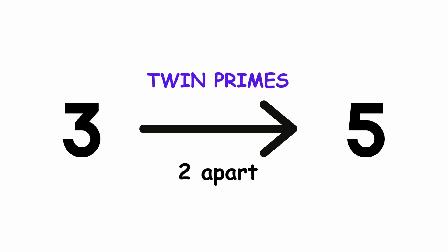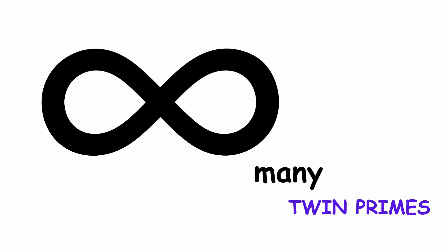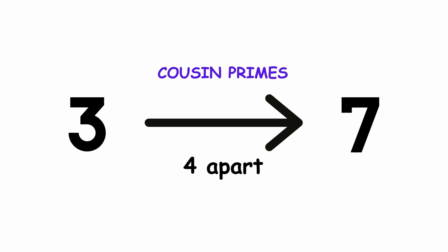The twin prime conjecture proposes that there are infinitely many twin primes. It is the second of Landau's problems, and it has been considered one of the most important unsolved problems in number theory for many years.